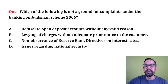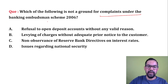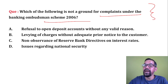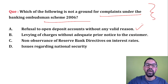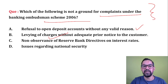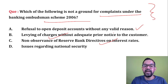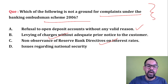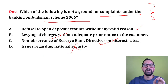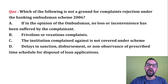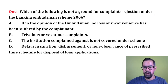Next question: Which of the following is NOT a ground of complaint under Banking Ombudsman Scheme? Refusal to open a deposit account without valid reason — you can approach Banking Ombudsman. Levying charges without adequate prior notice — you can file a complaint. Non-observance of RBI directive on interest rate — you can approach Banking Ombudsman. Issue regarding national security — this is NOT a concern of Banking Ombudsman. So option D is the correct answer.